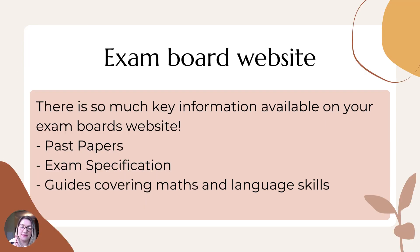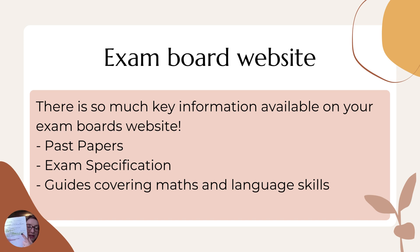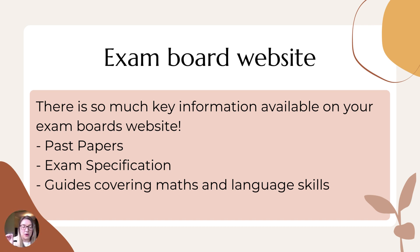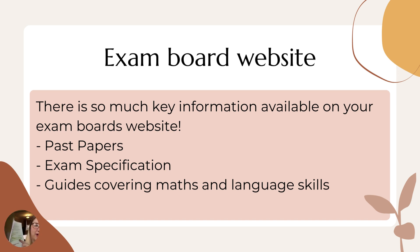The exam board website is a really useful place to look for different information. You've got not only past papers on there, you also have the exam specification — a crucial document that runs through everything that could be on your exam. Using the topic lists I talked about yesterday, you can go to a specific section. For example, if you're revising for paper one biology, you'd go to the section about cell division, which is coded 4.1.2. The next topic is part of B2, so you'd go to 4.2.2 and find the information you need.